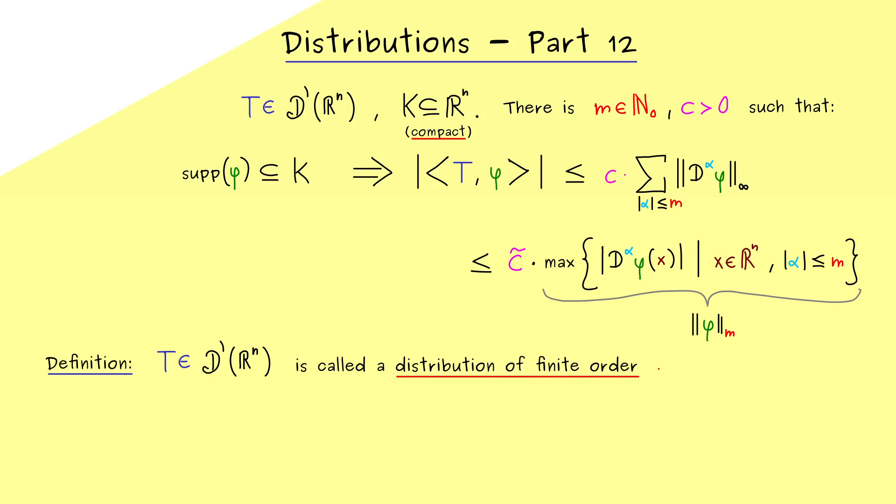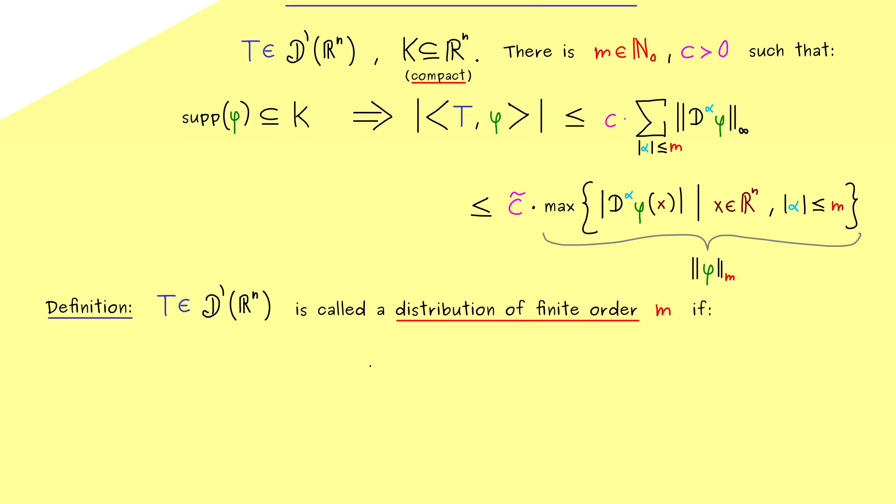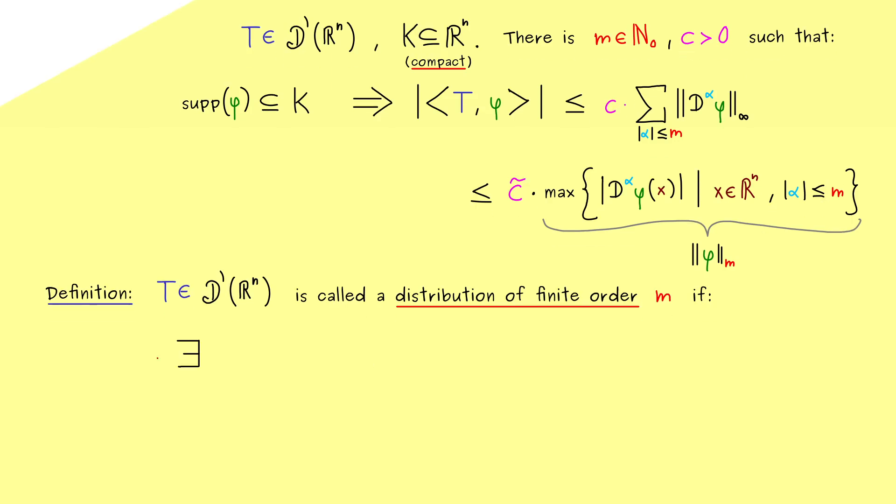And moreover, we can say more precisely, it's of finite order m, if m is the number from before. And in order to get the correct idea, let's write it down with quantifiers now.